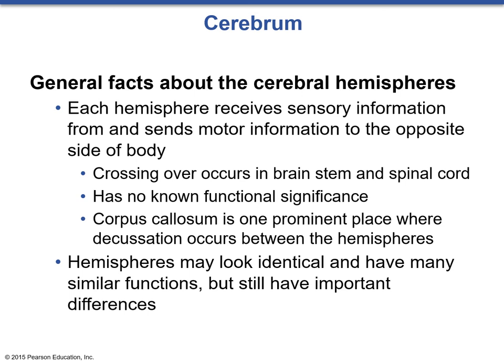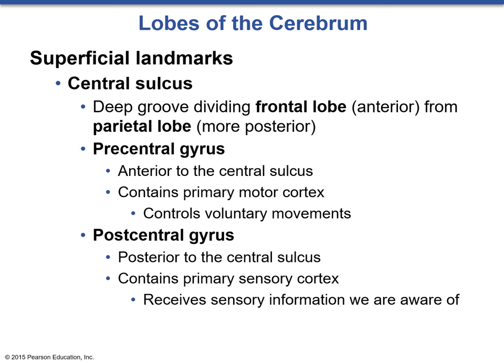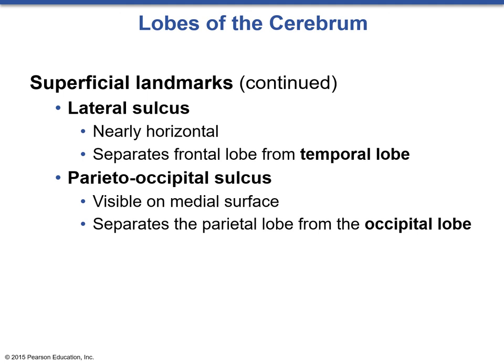The hemispheres may look identical and have many similar functions but still have important differences. One of the primary grooves is called the central sulcus — a deep groove that divides the frontal lobe from the parietal lobe. On the frontal lobe side, the precentral gyrus deals with motor signals and is the motor cortex. The postcentral gyrus, on the parietal lobe side, deals with sensory information and contains the primary sensory cortex. The lateral sulcus is a nearly horizontal groove that separates the frontal lobe from the temporal lobe, and the parieto-occipital sulcus separates the parietal from the occipital.